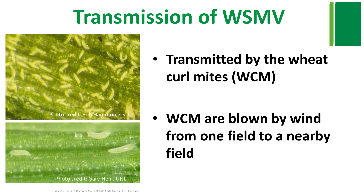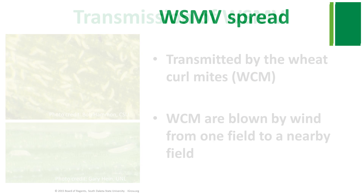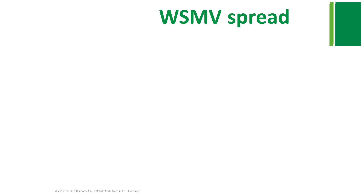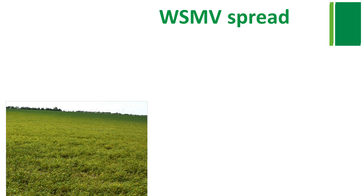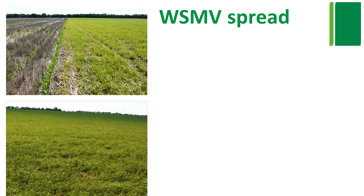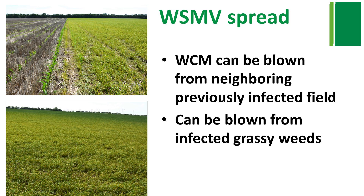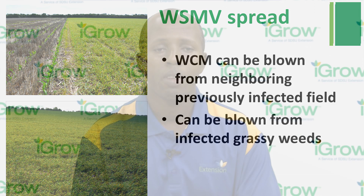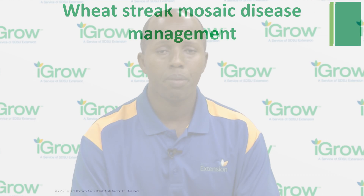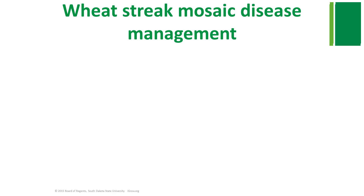Wheat curl mites are not capable of moving from plant to plant or from field to field on their own — they are blown by wind to nearby plants. However, they are capable of crawling over short distances between tillers or leaves that are in contact with each other. Because deposition of wheat curl mites is by wind, this explains why heavy wheat streak mosaic virus infections are sometimes found along the field edges. Wheat curl mites can survive without a suitable host for only 24 hours.